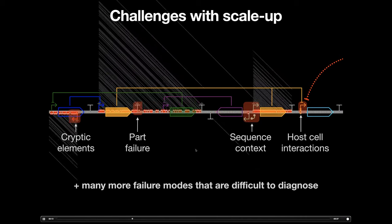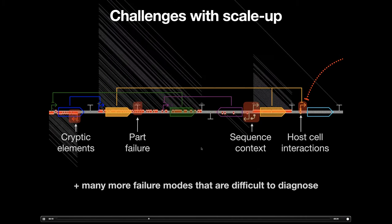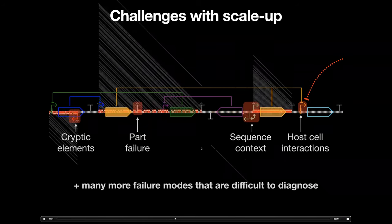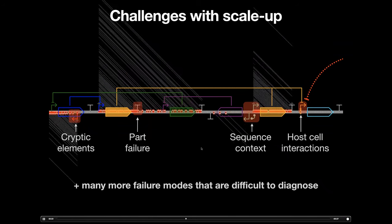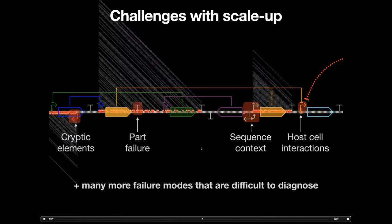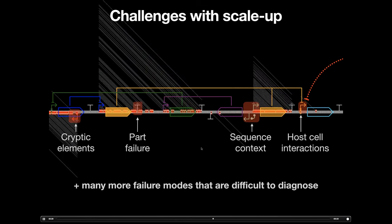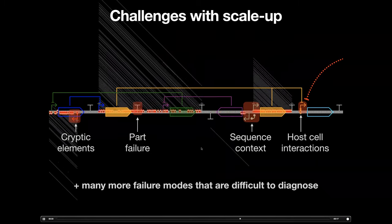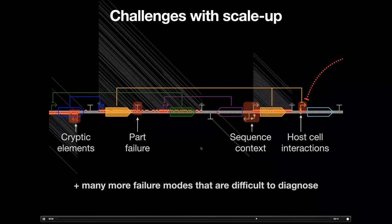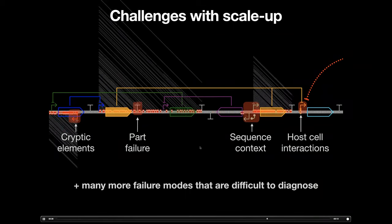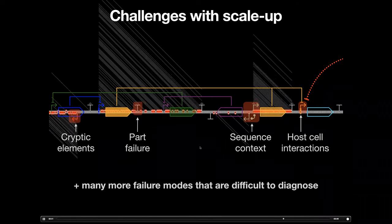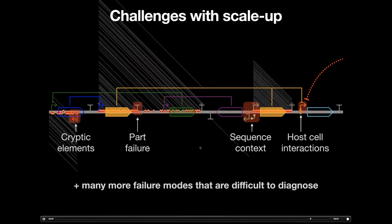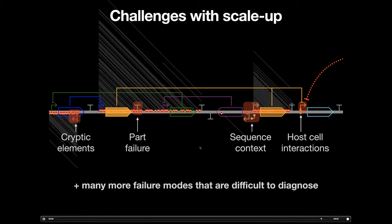Figuring out precisely how a circuit consisting of tens or hundreds of parts has broken down, just by looking at the output, is really impossible. Other engineering fields have tackled this challenge by developing specific tools like debuggers and multimeters. But as bioengineers, we really lack the ability to see the complex transcriptional flows within our circuits, and therefore it's really hard to understand how precisely they're breaking down.